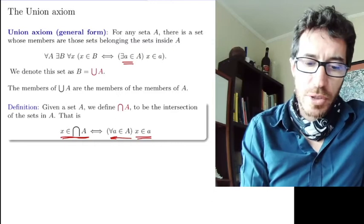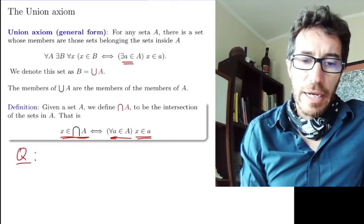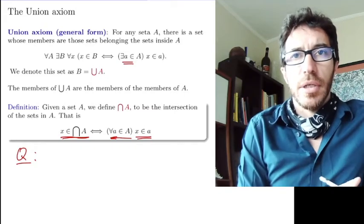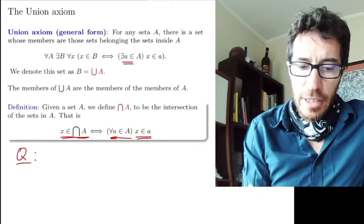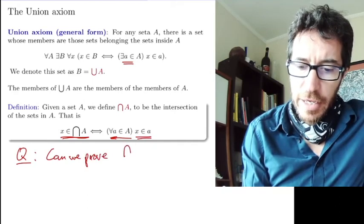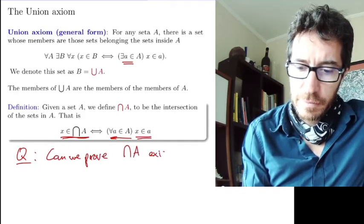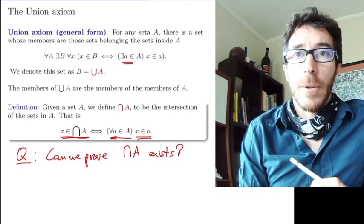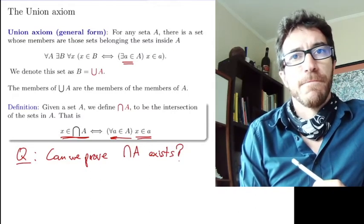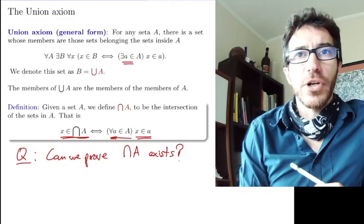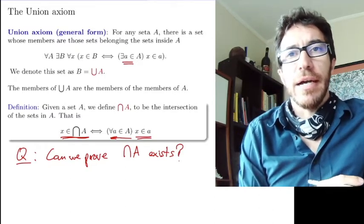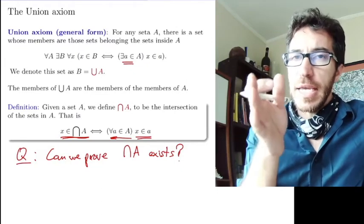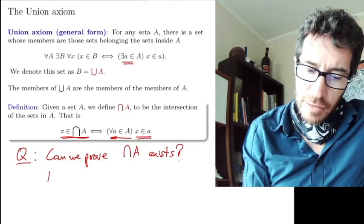Questions for you guys. For the union, we have an axiom that says this union exists. What about the intersection? Can we prove that intersection of A exists, or do we need an axiom for this? The answer is that we're not going to have an intersection axiom, but it's going to follow from another axiom called the subset axiom that we're going to see next.